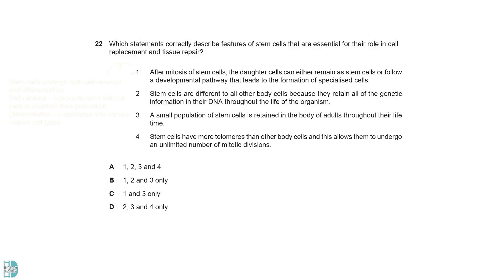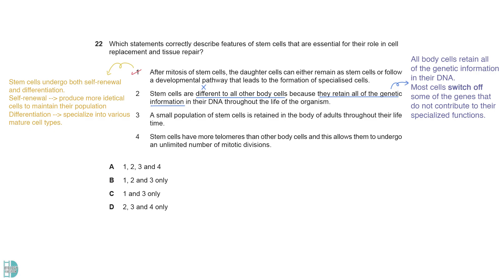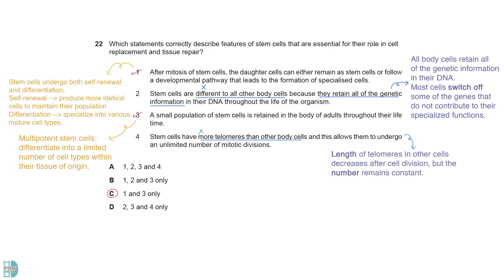One is correct. Stem cells undergo both cell renewal and differentiation. Self-renewal allows stem cells to maintain their population by dividing and producing identical daughter cells, while differentiation enables them to specialize into various mature cell types. Two is incorrect because all body cells retain all of the genetic information in their DNA. The difference is that most cells switch off some genes that do not contribute to their specialized functions. Three is correct — adults have multipotent stem cells that can differentiate into a limited number of cell types within their tissues of origin. Four is wrong: the length of telomeres in other cells decreases after cell division, but the number remains constant.